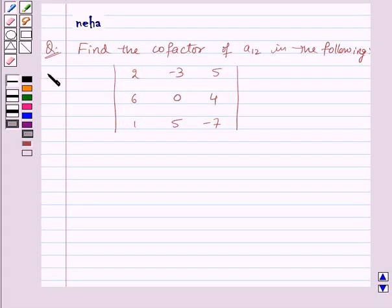Hello and welcome to the session. Today we will discuss the following question which says find the cofactor of A12 in the following, that is the determinant of order 3 by 3 with elements 2, minus 3, 5, 6, 0, 4, 1, 5, minus 7.